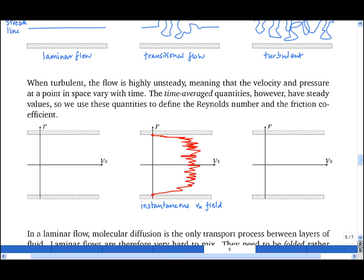We can time average these quantities, and of course if we time average over a long enough period, then these have steady values. And for the case of turbulent pipe flow, the average Vx field looks like this.